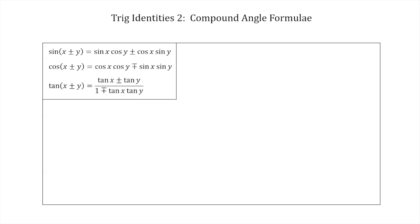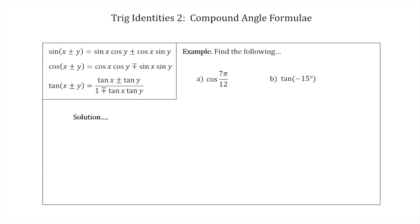We're going to put these formulas in a box and try some examples. Example A: find cos(7π/12). We have an angle measured in radians here — if you're not sure about radians there are videos in this series on that topic. Example B: find tan(−15°).